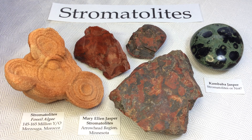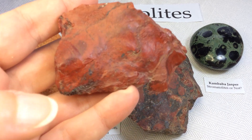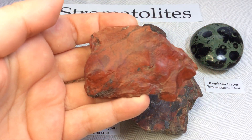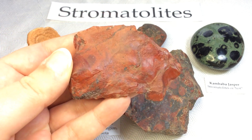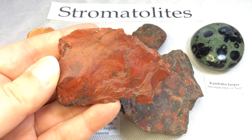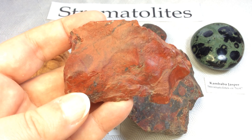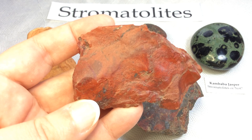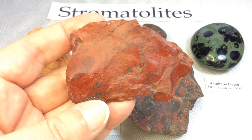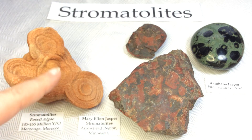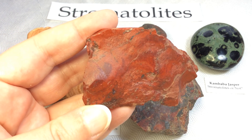So, Mary Ellen Jasper. Let's start with this really red specimen. Mary Ellen Jasper has a very cool swirling pattern of red jasper and hematite. It does contain fossiliferous stromatolite. These ones in particular are about 2.1 billion years old — so older than the specimen we just recently saw. The species is thought to be considered colonia undosa.